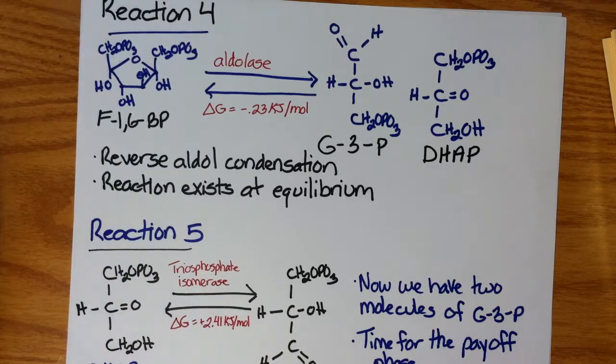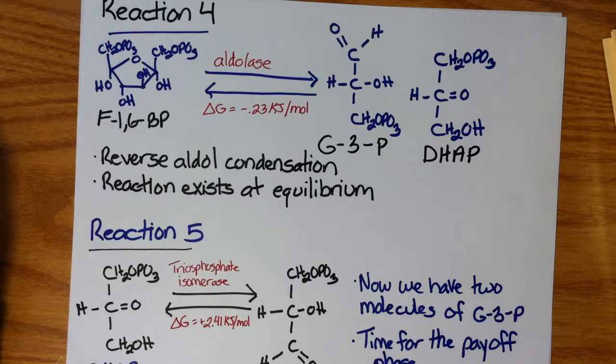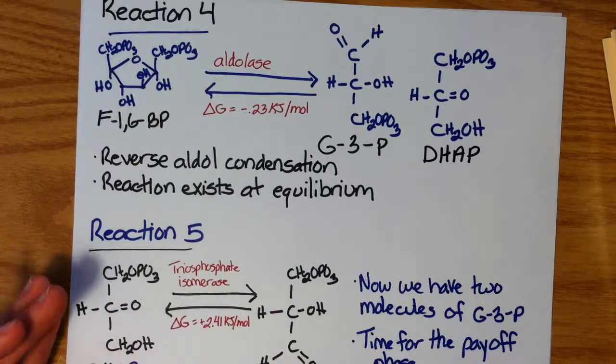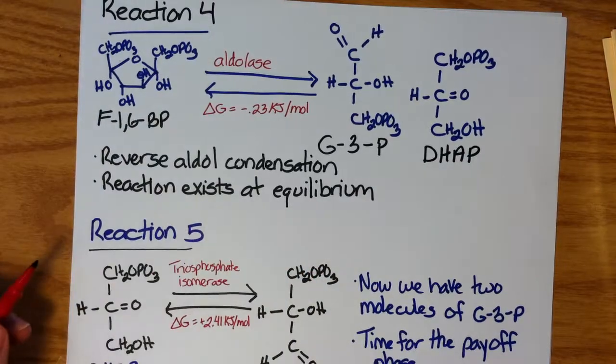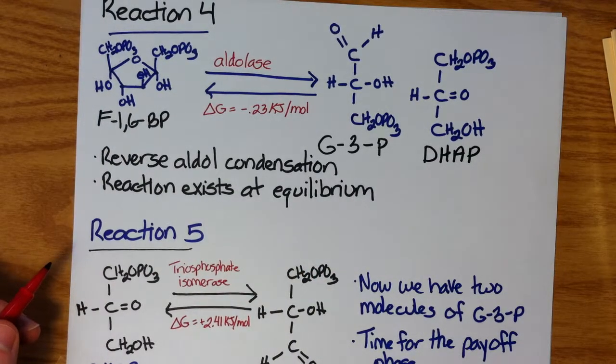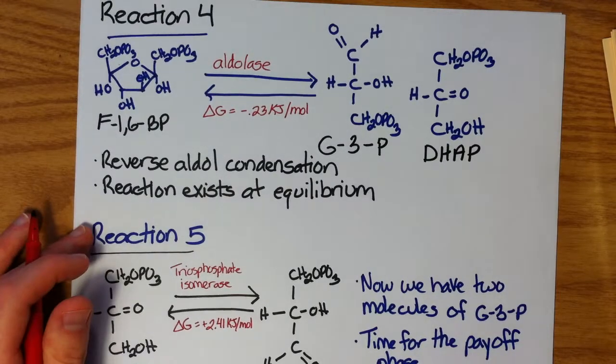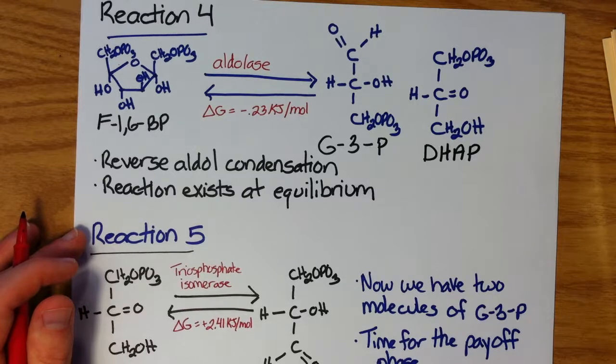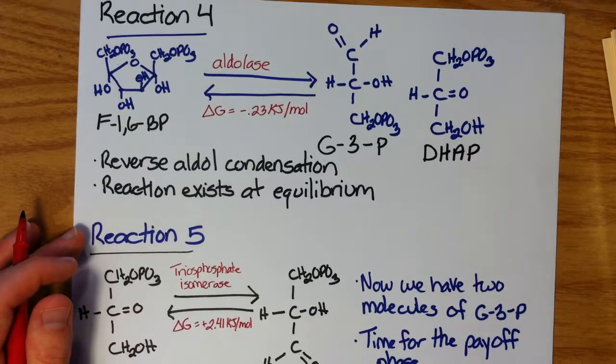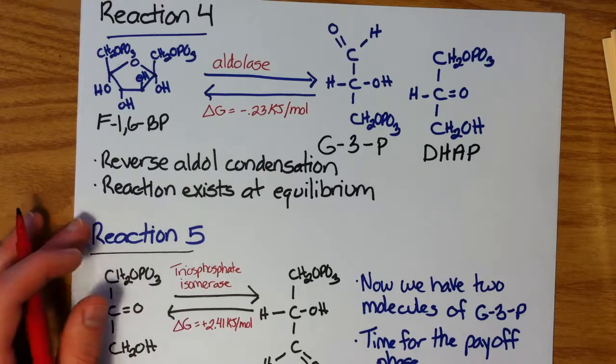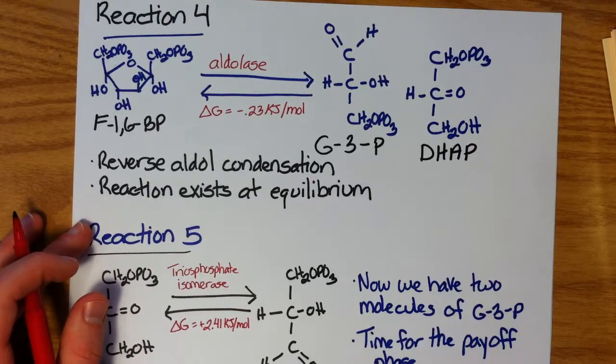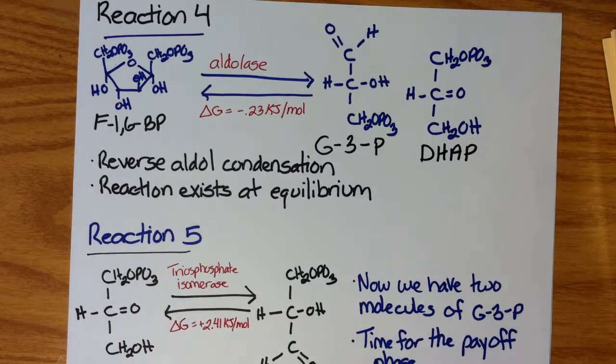And now we have two molecules of glyceraldehyde-3-phosphate, which will now be able to slowly, through a series of reactions, extract some energy out of this molecule, since we have these high-energy phosphate groups, and be able to convert it into pyruvate, which will be used in other metabolic pathways downstream, more specifically the citric acid cycle and the electron transport chain. All right, I hope you enjoyed this video. And check out video two to check out the rest of the glycolytic pathway and the payoff phase.